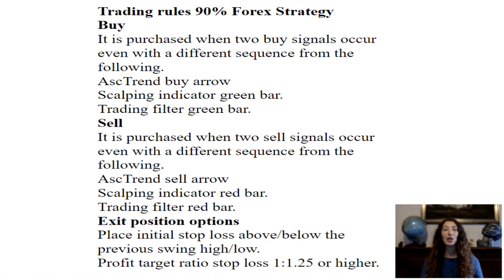Trade rules for the 90% win Forex strategy. Buy: a buy trade is entered when two buy signals occur, even with a different sequence, from the following — ASC Trend buy arrow, Scalping Indicator green bar, Trading Filter green bar.